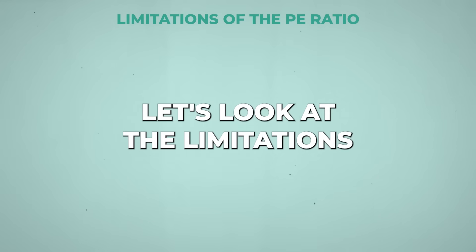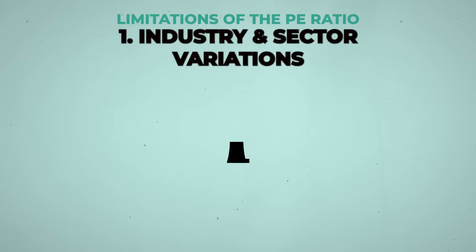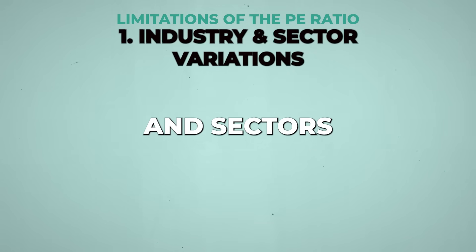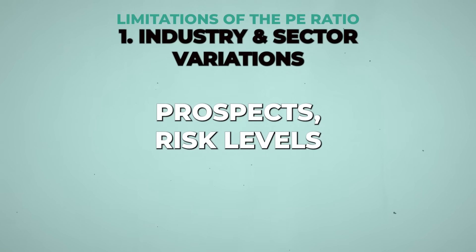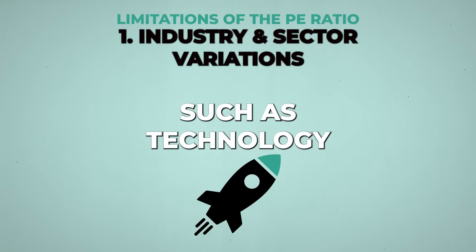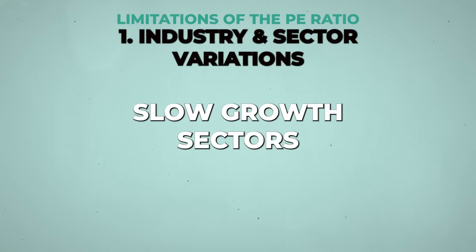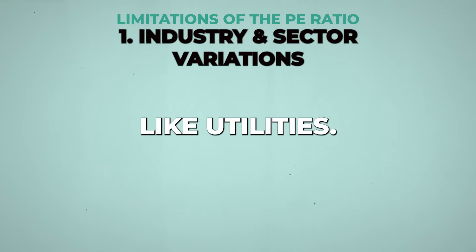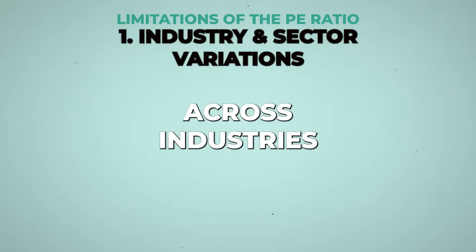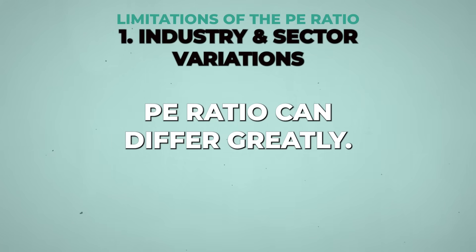Now let's look at the limitations of the P-E ratio. Industry and sector variations: the P-E ratio can vary significantly across different industries and sectors due to varying growth prospects, risk levels, and business models. High growth industries, such as technology, often have higher average P-E ratios compared to more stable, slow-growth sectors like utilities. Investors should be cautious when comparing P-E ratios across industries, as what constitutes a high or low P-E ratio can differ greatly.